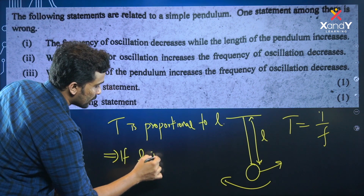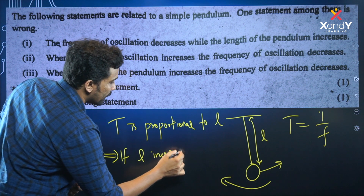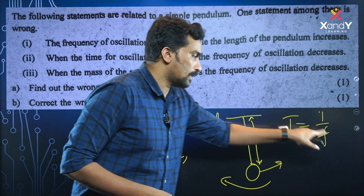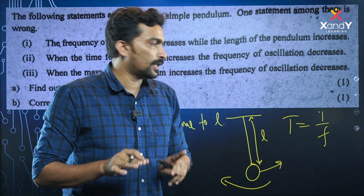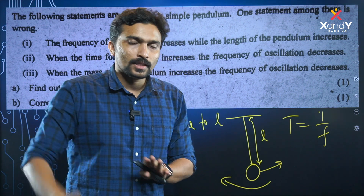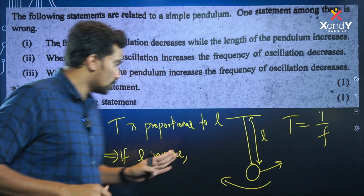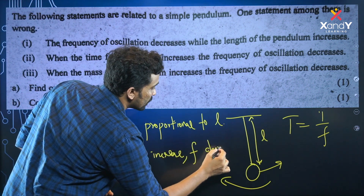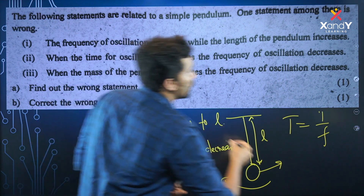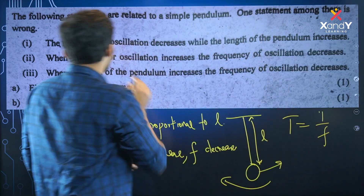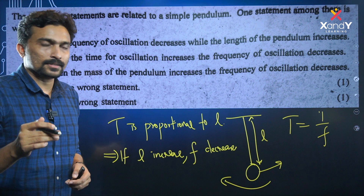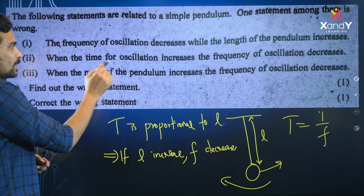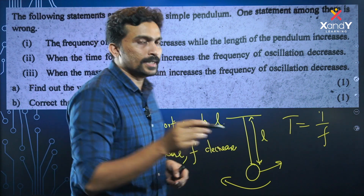If length increases, the time period increases. Since frequency is the inverse of time period, frequency decreases. So the frequency of oscillation decreases while the length of the pendulum increases. When the time period of oscillation increases, frequency decreases.